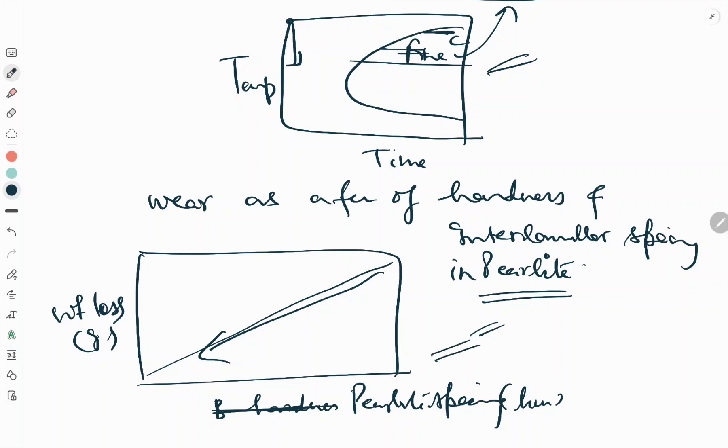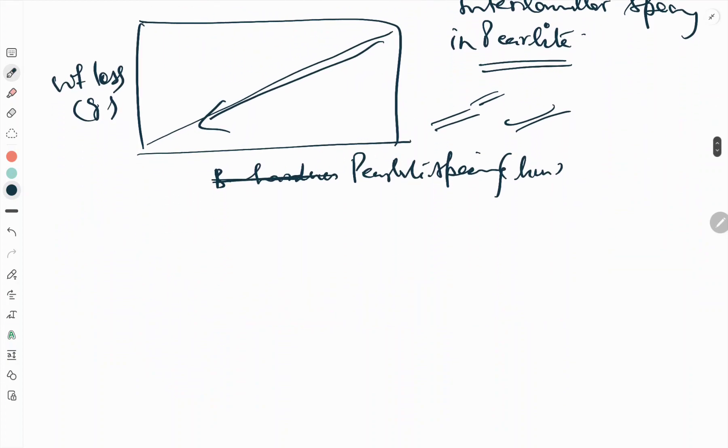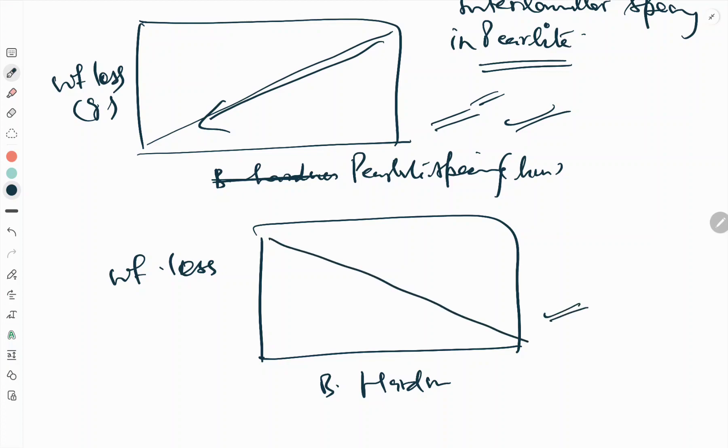This curve shows that weight loss due to wear of rail steels decreases with decreasing interlamellar spacing of pearlite. If you see weight loss versus hardness, that is Brinell hardness, the curve shows the weight loss due to wear of rail steels decreases with increasing hardness of steel.